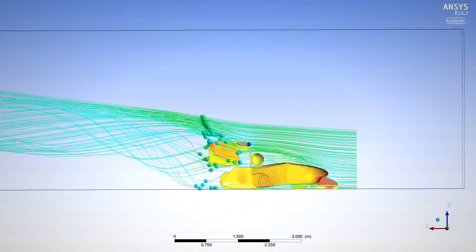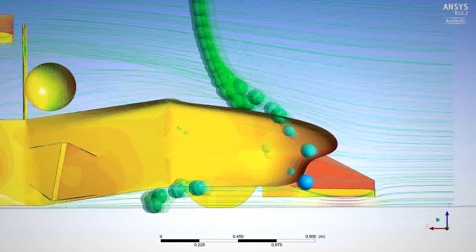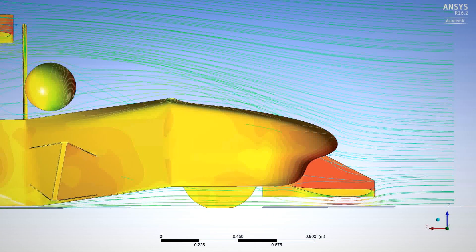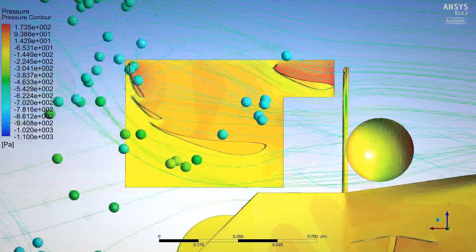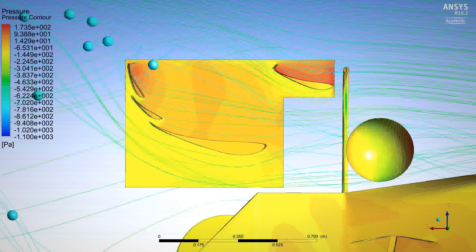First, we decreased the size of the end plates to allow for more airflow over the wing in the corners. This allows us to increase the downforce where it actually matters. Then, we implemented gurney flaps, which allowed us to run the wings at higher angles of attack to generate more downforce.